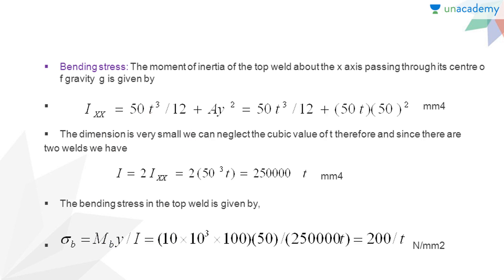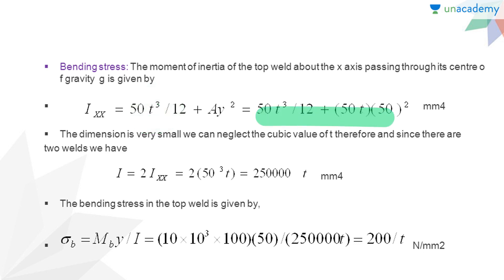I_XX equals (50T³/12) + AY², where 50T³/12 is the second moment of area of the weld from its own centroid, and AY² is the product of the area of the weld and Y, which is the distance of the weld from the chosen axis — the X-axis passing through the centroid of the weld pattern. Therefore we get (50T³/12) + (50T × 50²). Since T is very small, we can neglect the cubic term in T.